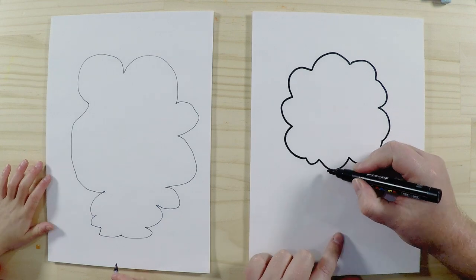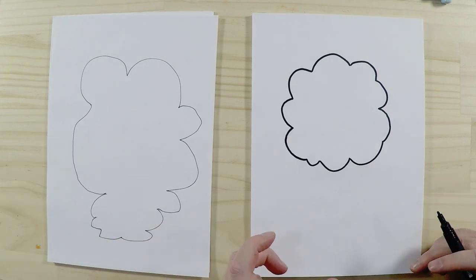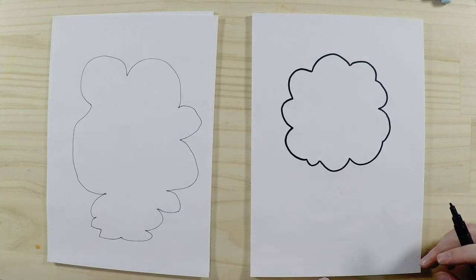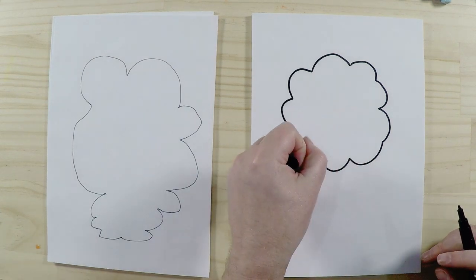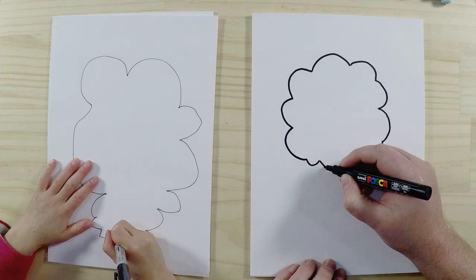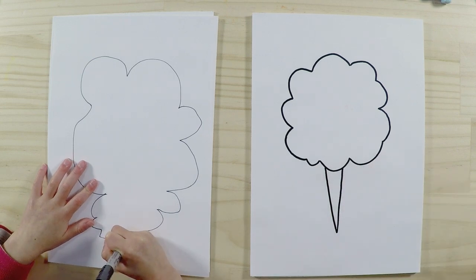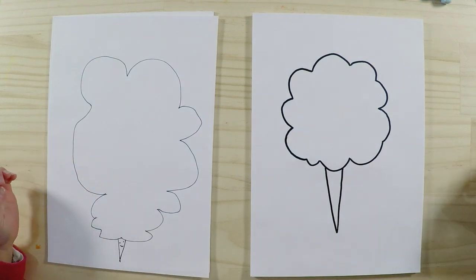Now the other thing we're going to do with the candy floss is add a little stick—it's like a bit of a cone that we normally hold and eat it with. So basically, we're going to draw a V shape, a nice line down there and straight back up, just like that.